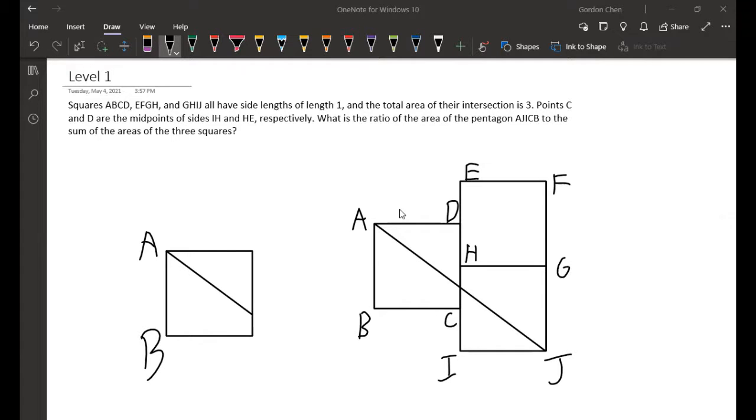And so we have C and D are the midpoints up here, and we want to find the ratio of this pentagon to the area of the 3 squares, so it's a total out of 3.